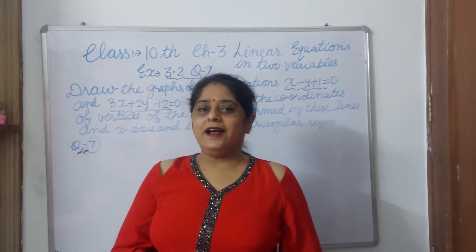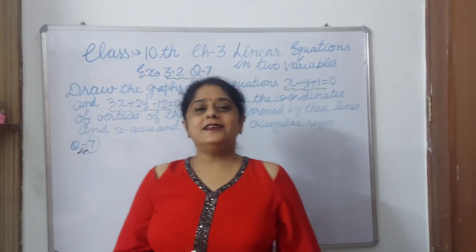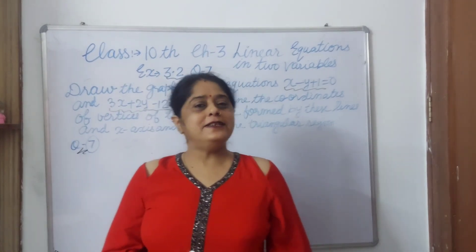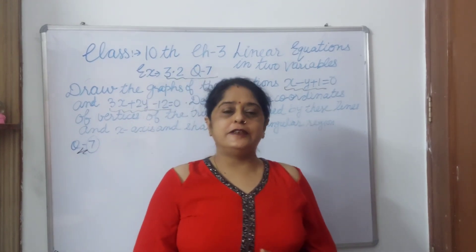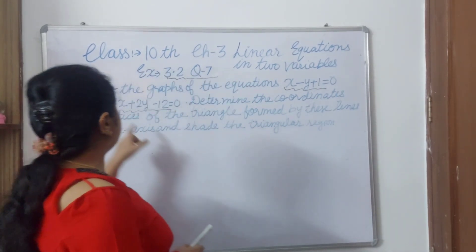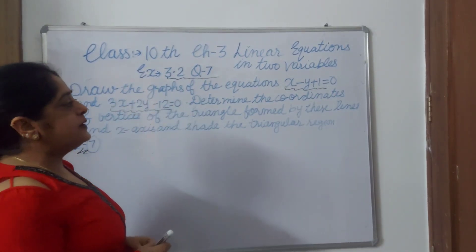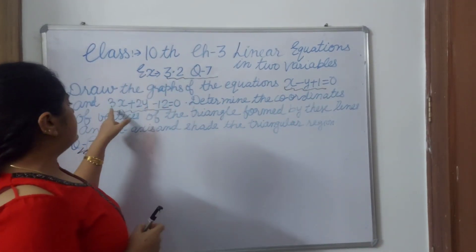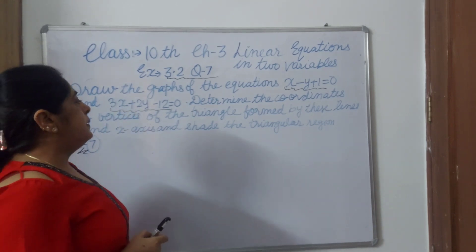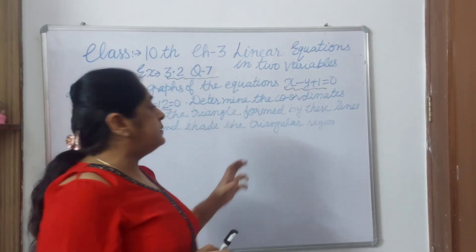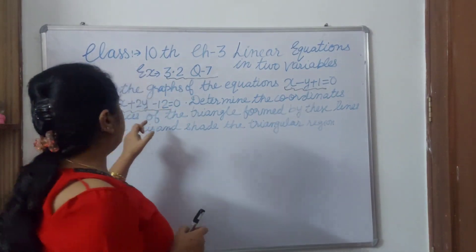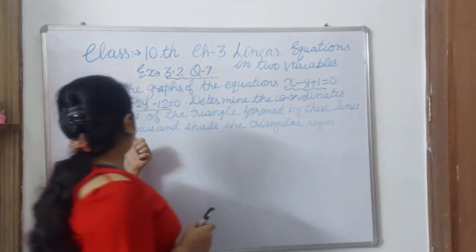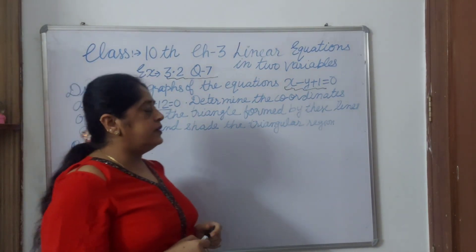Hello everyone, today I will explain exercise 3.2 question number 7, and the chapter number is pair of linear equations in two variables. First of all, we read the statement. Draw the graph of the equations: first equation is x minus y plus 1 equals 0, and second is 3x plus 2y minus 12 equals 0. You have to determine the coordinates of the vertices of the triangle formed by these two lines and the x-axis, and shade the triangular region.